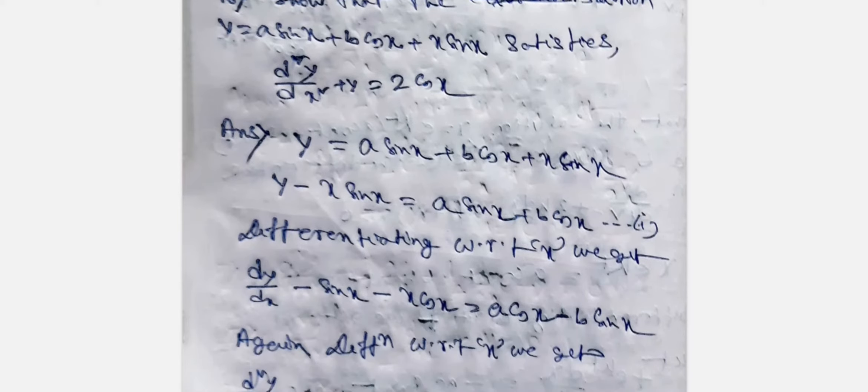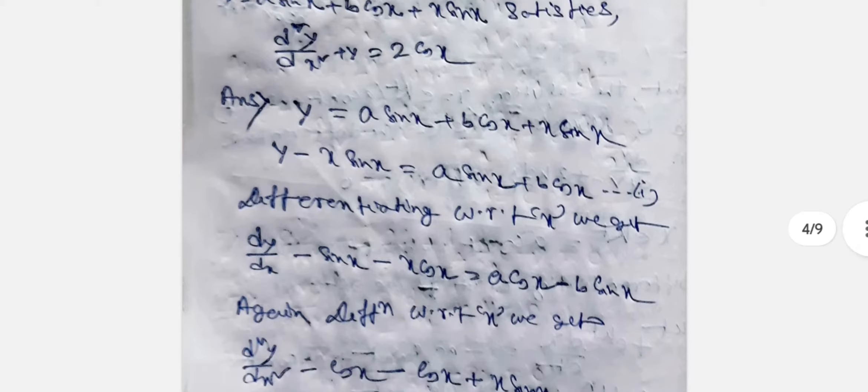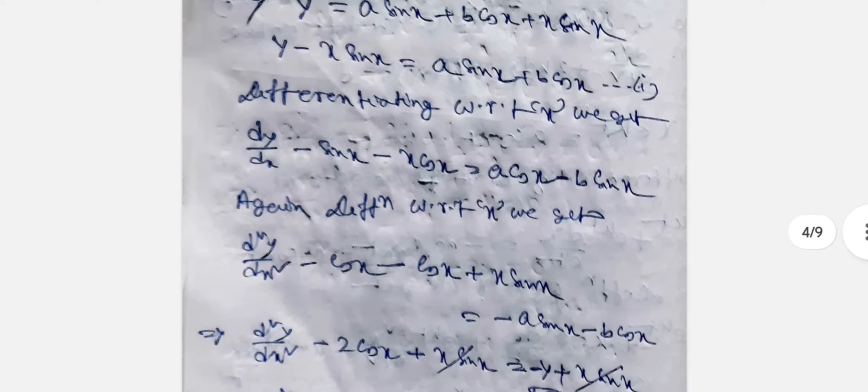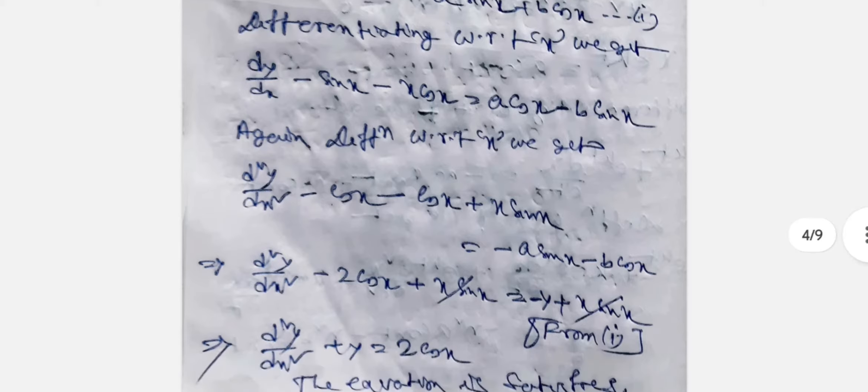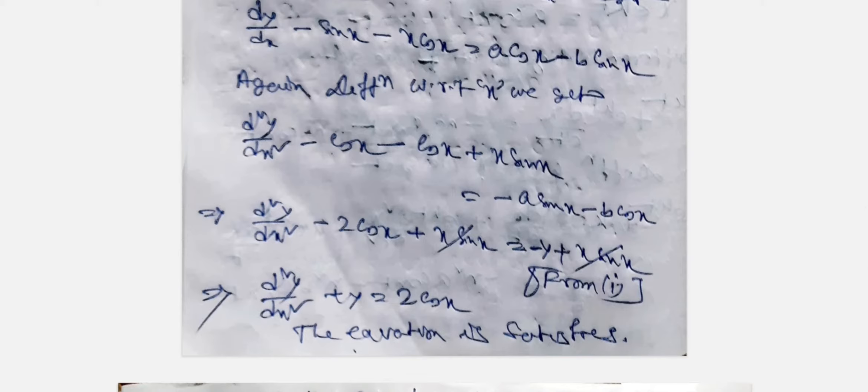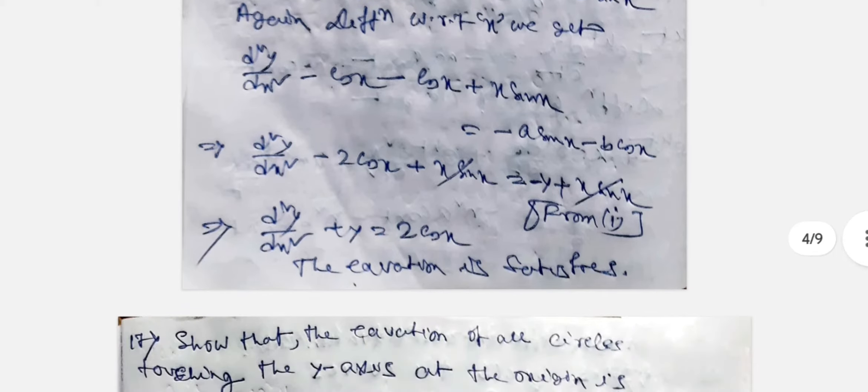Next question: Show that y = a sin(x) + b cos(x) + x sin(x) satisfies d²y/dx² + y = 2 cos(x). Let y - x sin(x) = a sin(x) + b cos(x). Differentiating: dy/dx - sin(x) - x cos(x) = a cos(x) - b sin(x). Again differentiating: d²y/dx² - 2cos(x) + x sin(x) = -a sin(x) - b cos(x). So d²y/dx² - 2cos(x) + x sin(x) = -(y - x sin(x)), giving d²y/dx² + y = 2cos(x). Proved.